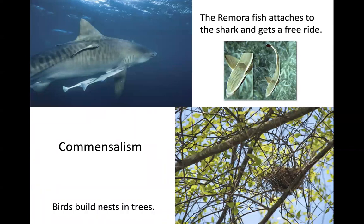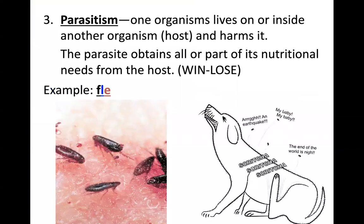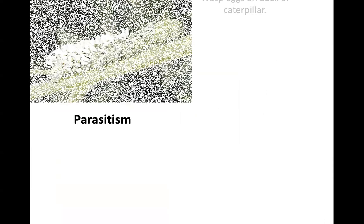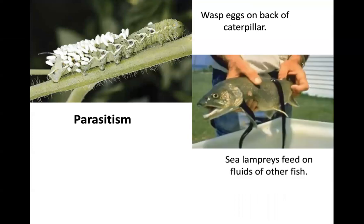Commensalism is a relationship where one member benefits and the other is neither harmed nor helped. An example is when the remora fish attaches to the shark and gets a free ride — the fish benefits and the shark is unharmed. Another example is birds building nests on a tree — they get a nice place to protect and lay eggs, and the tree is unharmed. Parasitism is a relationship where one organism lives on or in another organism and causes harm to it. The parasite obtains all or part of its nutritional requirements from the host, and the host is negatively impacted. An example of a parasitic relationship is fleas on a dog, or a wasp laying eggs on the back of a caterpillar — that is certainly a parasitic relationship.